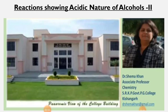This is part 2 of reactions showing the acidic nature of alcohols. In the previous lecture, we saw dehydrogenation — removal of hydrogen from primary and secondary alcohols gives aldehyde and ketone respectively. But for tertiary alcohols, there is no dehydrogenation; instead they undergo dehydration or water removal. This reaction takes place in the presence of hot copper at 300 to 350 degrees Celsius, and the reactions occur in the vapor phase.